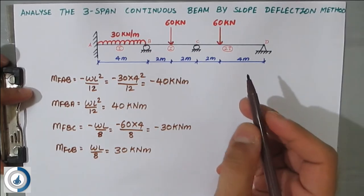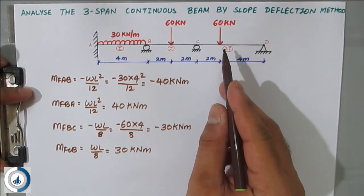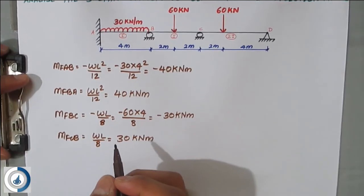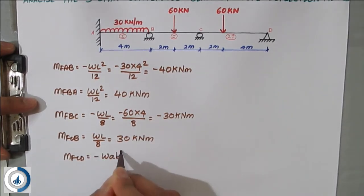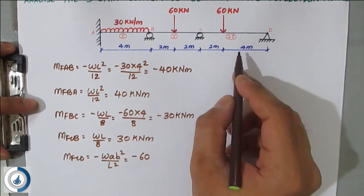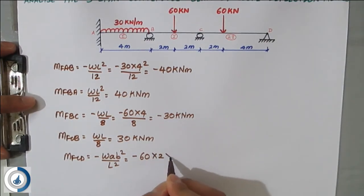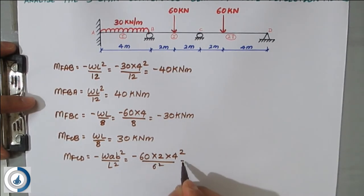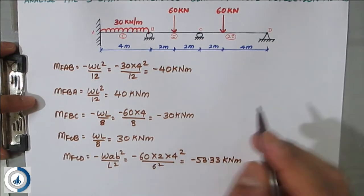For the third span, it is very important to know the fixed end moment formula because the load is not acting at the center — it acts at a point where the lengths are unequal. For these kinds of fixed end moments you must remember the formula. MF_CD = −w·a·b²/L². Substituting: w = 60, a = 2 m, b = 4 m, total length L = 6 m, so MF_CD = −60×2×16/36 = −53.33 kN·m.